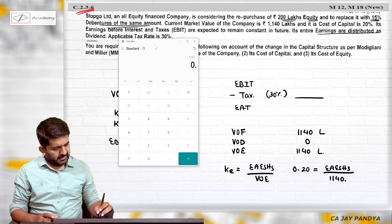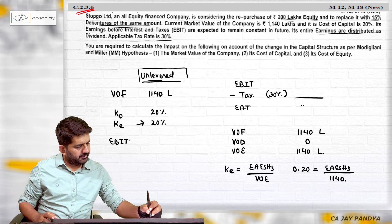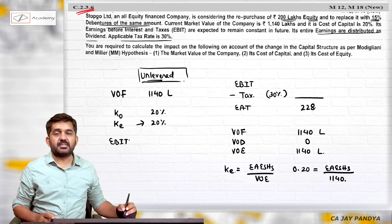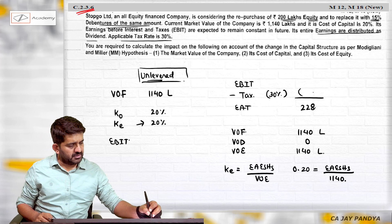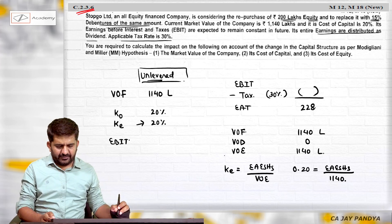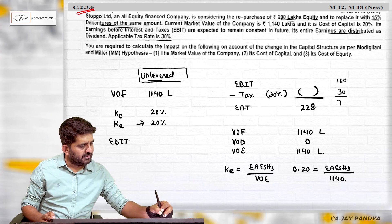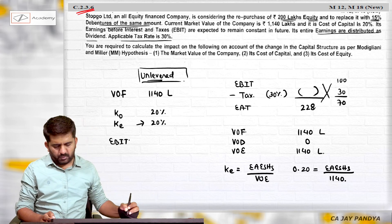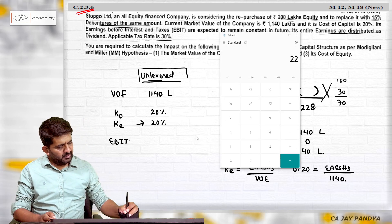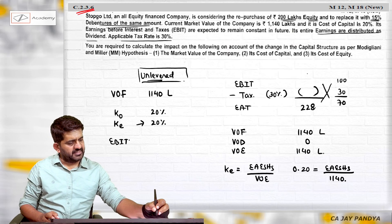So earnings available to equity shareholders is 1140 into 0.2, which is 228. There would have been tax deducted, so EBIT. If this is 100, this is 30 and this is 70, you can easily do cross multiplication. 228 divided by 70 percent which is 325.71.